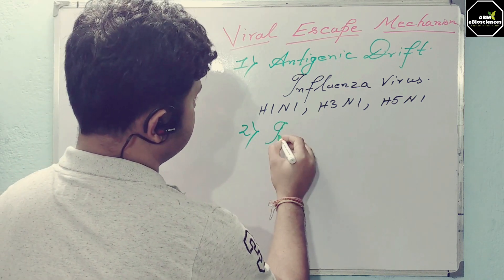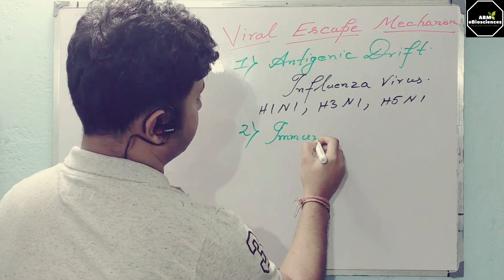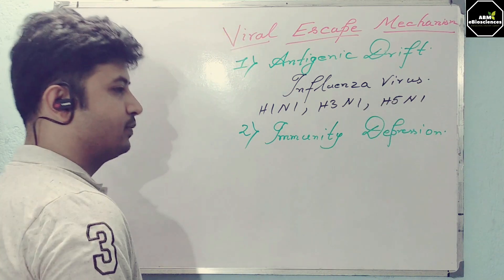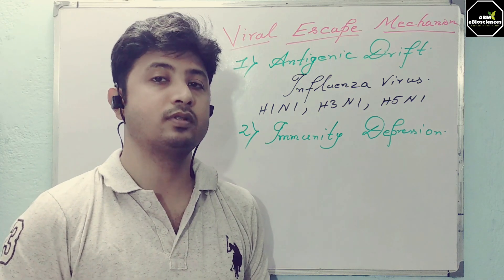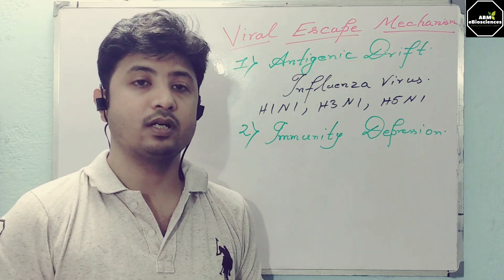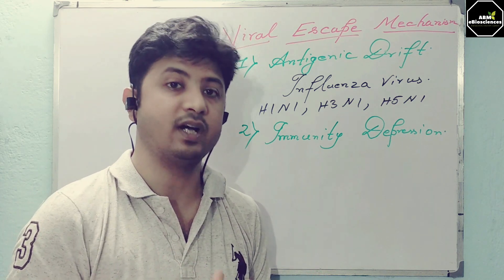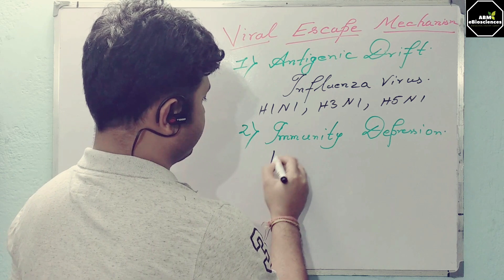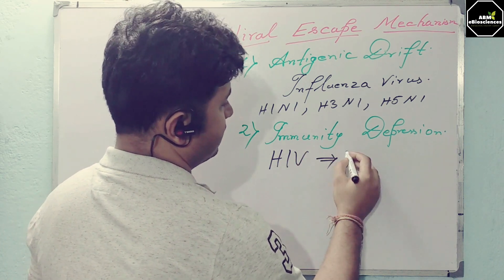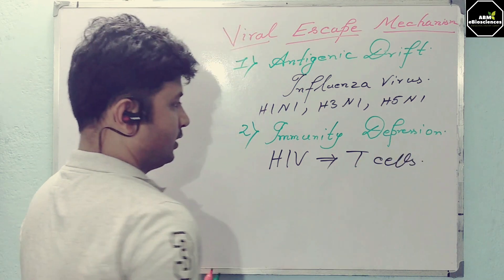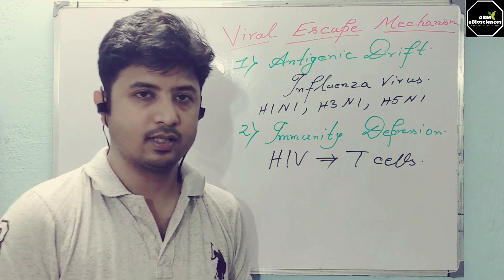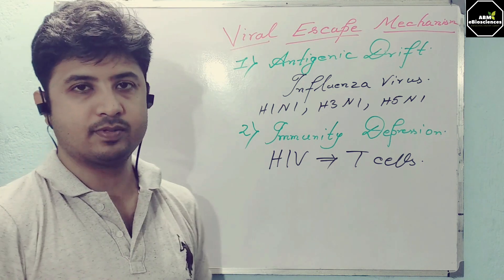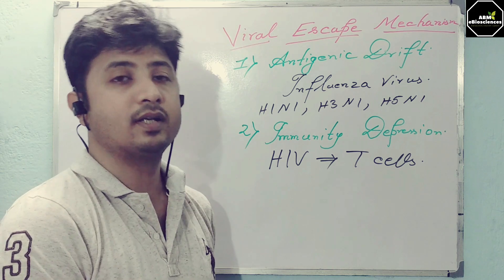The second mechanism is immunity depression. Immunity depression means the levels of immune cells controlling the immune reaction are down-regulated by the virus. One example is HIV, which infects T cells. There are T helper cells and cytotoxic T cells. HIV generally acts on T helper cells, that is CD4-positive cells, and it lyses those cells and reduces the count of CD4-positive cells.